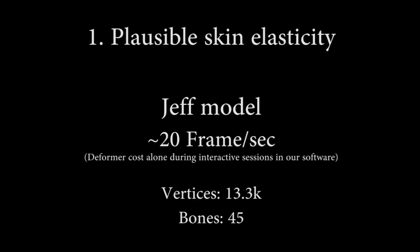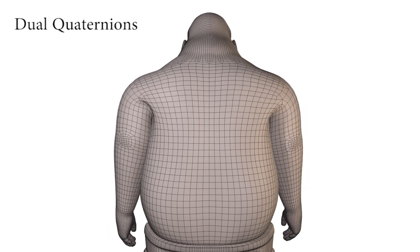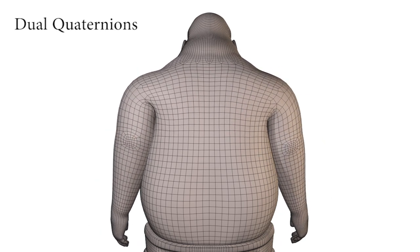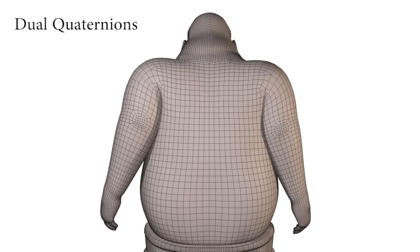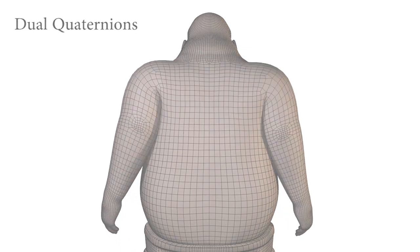In all the following results, we use automatic skinning weights computed with heat diffusion. We first show dual quaternion skinning with large self-intersecting areas, here between the arm and the torso.